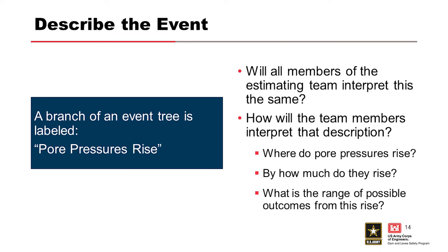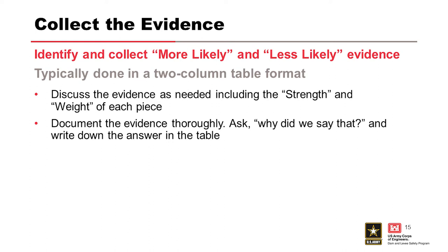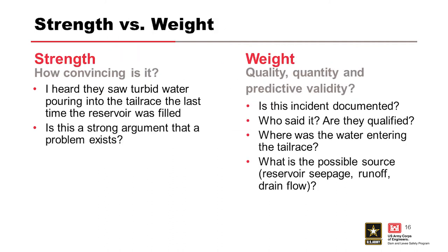Evidence making an event more likely and less likely needs to be thoroughly identified and collected. This is typically done in a two-column table format for each event or node in the event tree. When estimating probabilities, not all evidence will be given equal weight — we need to be careful of hearsay evidence and seek out corroborating information. We need to be as objective as possible and make the best estimate, not a conservative estimate, because significant investments are involved when talking about remediation and repair. Documentation must be clear enough that someone not at the meeting could understand what the team was thinking.